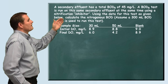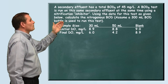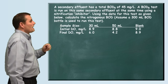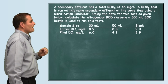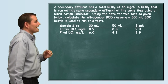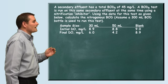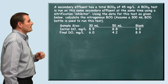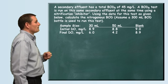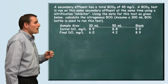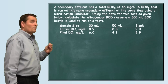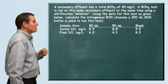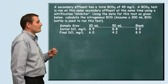The problem reads: a secondary effluent has a total BOD of 45 milligrams per liter. A BOD test is run on this same secondary effluent at the same time using a nitrification inhibitor. Using the data for this test as given below, calculate the nitrogenous BOD. We're supposed to assume that a 300 milliliter BOD bottle is used to run this test.